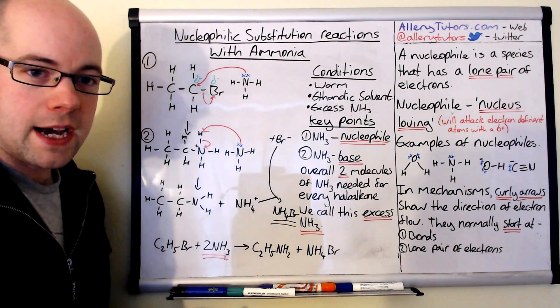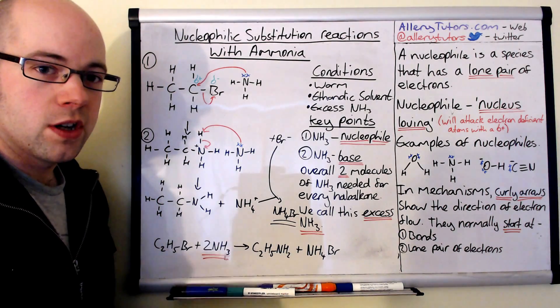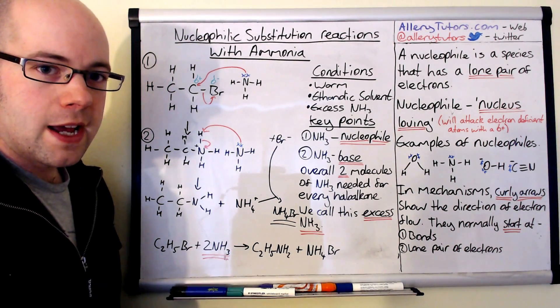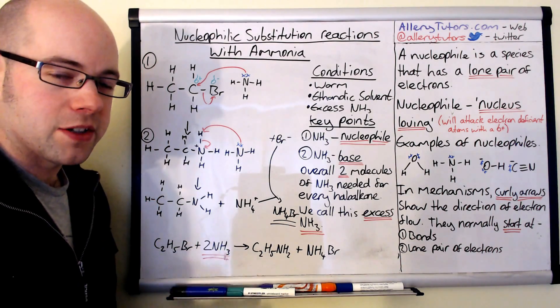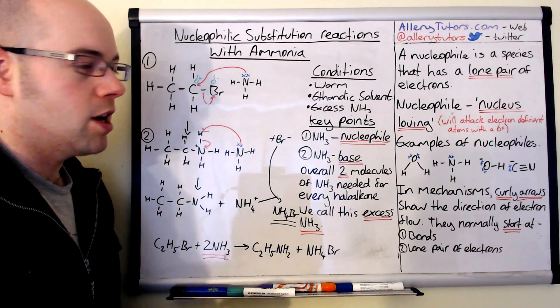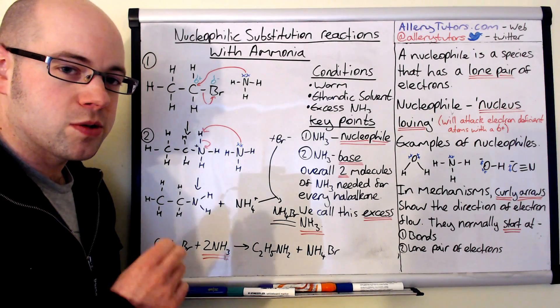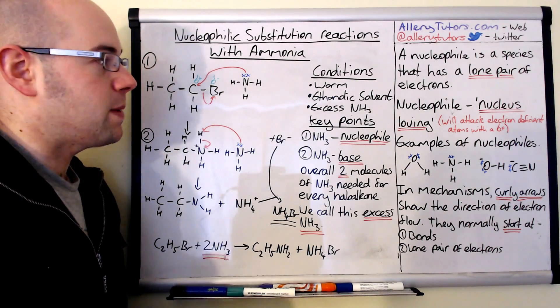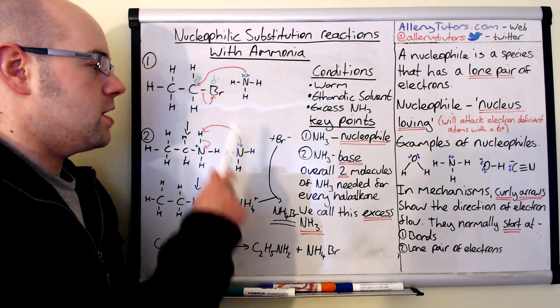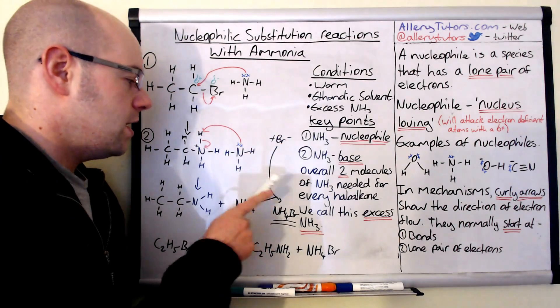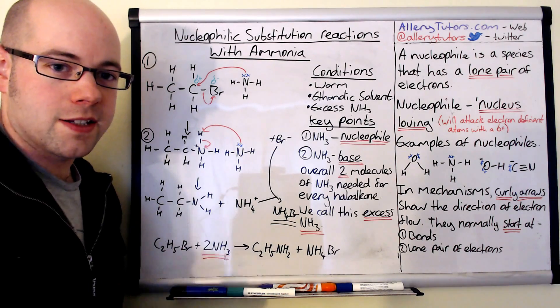If we didn't have excess ammonia this reaction wouldn't occur so it's really important that you know what we mean by the word excess. This reaction is quite complex, there's a lot of steps. You've got to make sure you've got everything right, make sure the arrows are pointing in the right direction, they're going to the right place and make sure especially with the ammonia one that you're showing the two steps clearly and you know that one is a nucleophile and then the ammonia acts as a base in the second step.